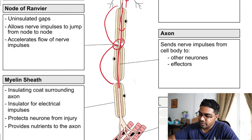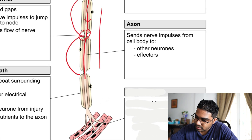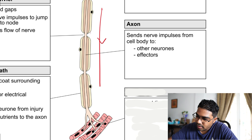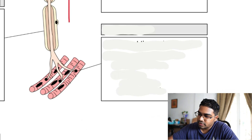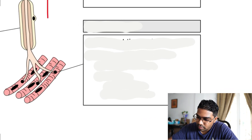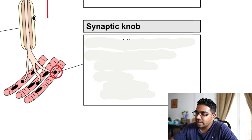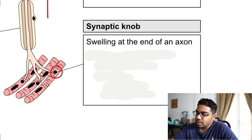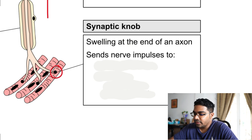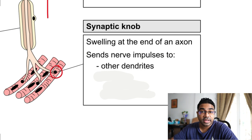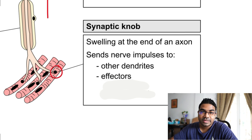At the very end of the neuron, at the very tip of the axon, there is a small bulge known as the synaptic knob. The synaptic knob is a swelling at the end of the axon, and its function is to send nerve impulses to either other dendrites or effectors, depending on the type of neuron.